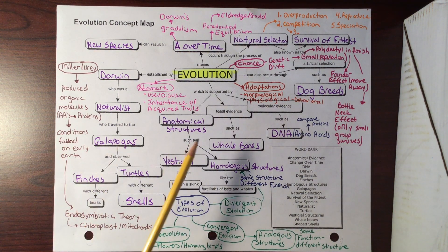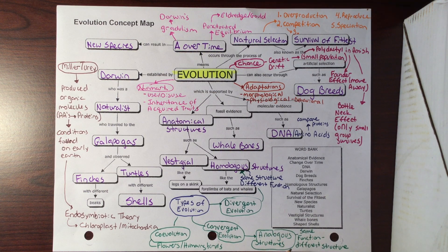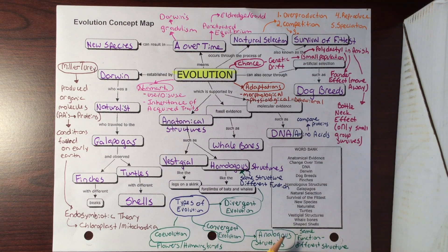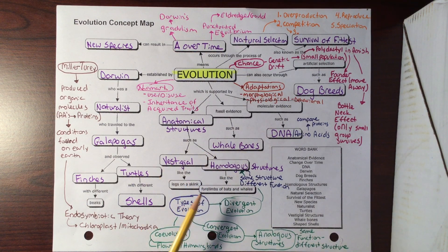We can also look at homologous structures. Homologous structures meaning that we have the same structure but a different function. That was like the arm of a cat, arm of a gorilla, the wing of a bat, the fin of a whale. They all have the same bone structure, but they're going to be used for a different function.